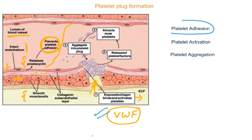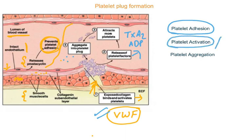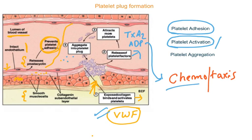This process is called platelet adhesion. Once attached, activation of the platelet cell occurs and they release certain factors — thromboxane A2 and ADP. This is called platelet activation and secretion of platelet factors. These factors cause chemotaxis — 'chemo' meaning chemicals and 'taxis' meaning movement — which calls all platelets to the injured site, so wherever the injury is, all platelets accumulate there.